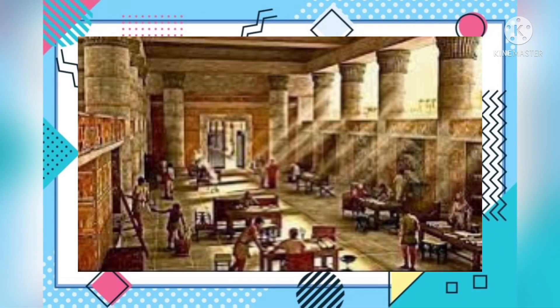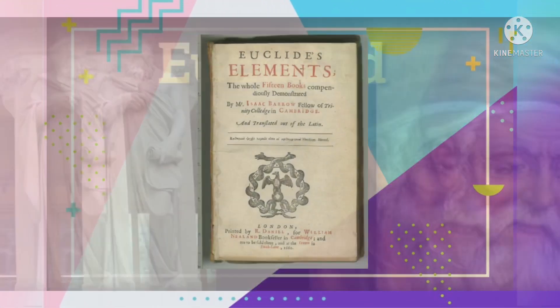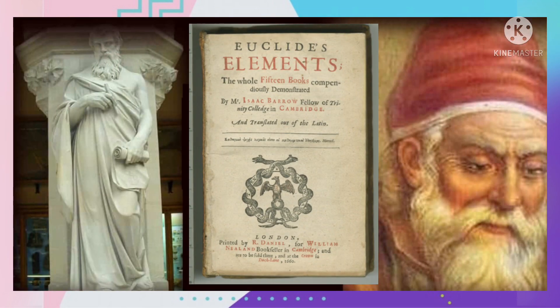But by Euclid's time, Alexandria, under the patronage of the Ptolemies, and with its prestigious and comprehensive library, had already become a worthy rival to the great academy of Plato. Euclid is often referred to as the Father of Geometry, because he wrote perhaps the most important and successful mathematical textbook of all time, The Elements, which represents the culmination of the mathematical revolution which had taken place in Greece up to that time.